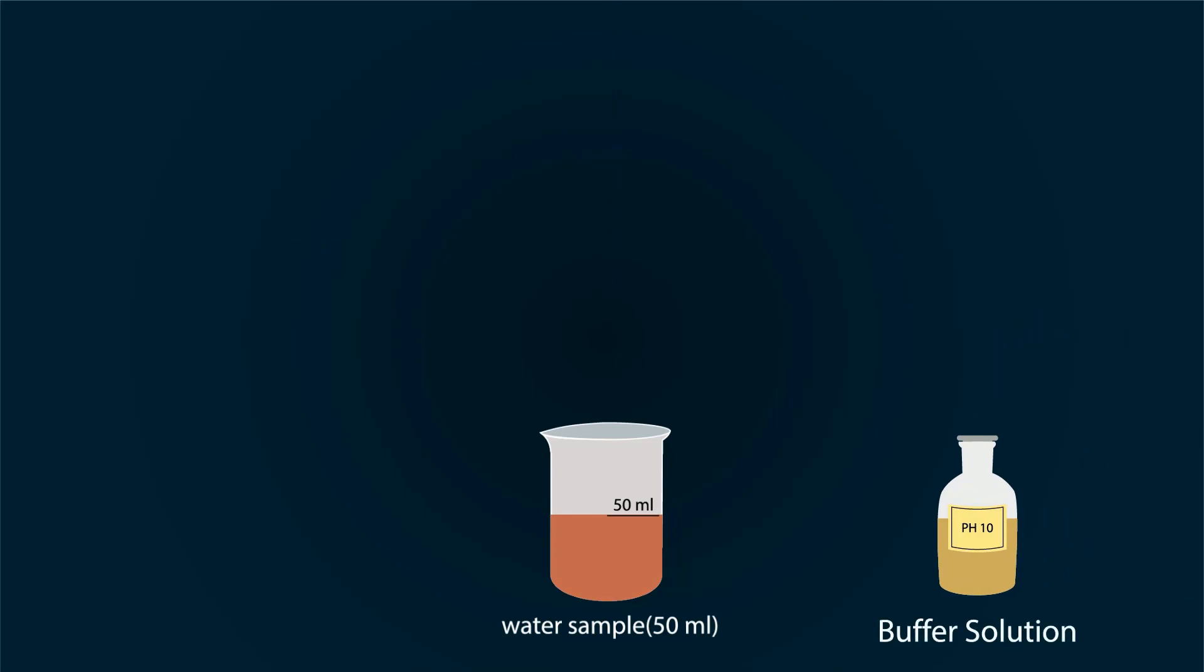Now take buffer solution which has a pH value of 10. Take 5 milliliters buffer solution with the help of a pipette and put it in the water sample. By adding buffer solution, the color will not change.